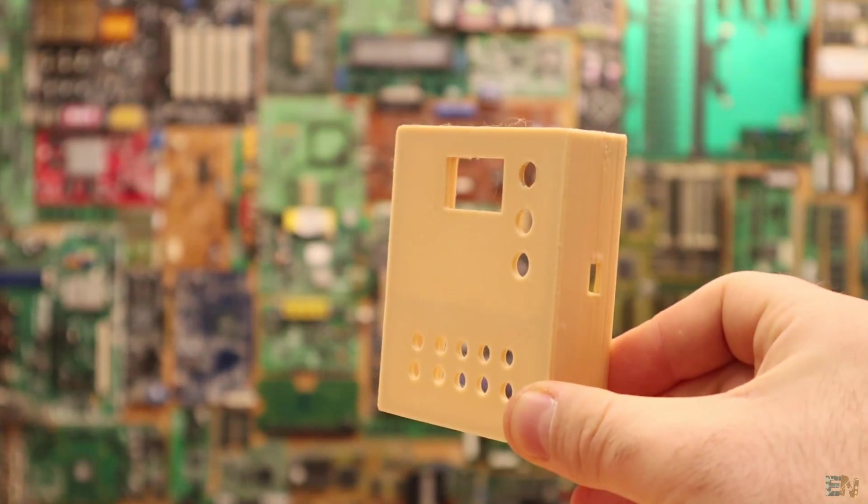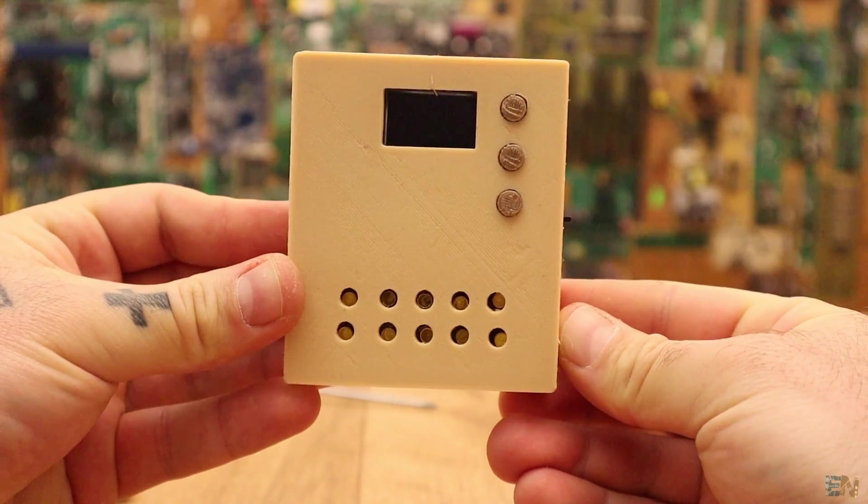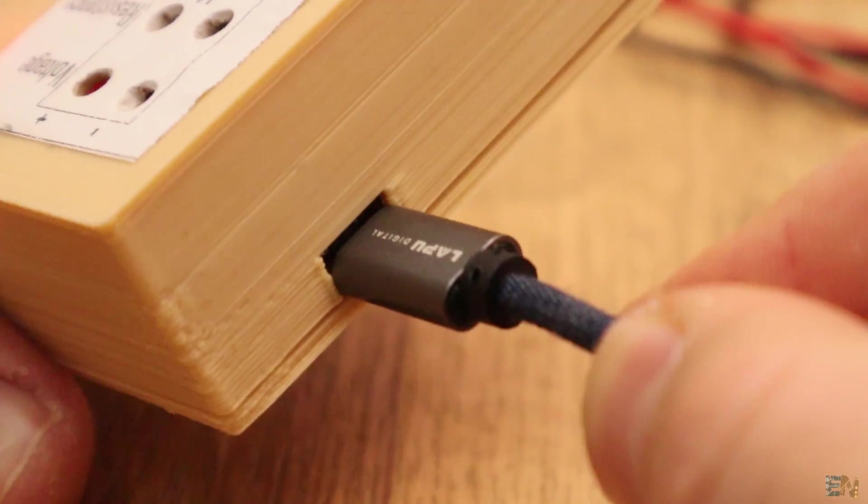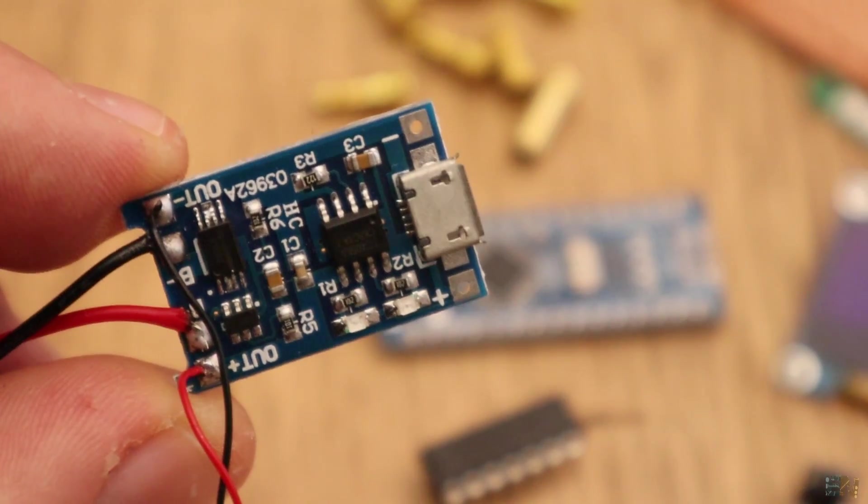The case is 3D printed using PLA material. It uses a 3.7V LiPo battery and can be charged using a USB cable since it has a USB LiPo battery charger module.